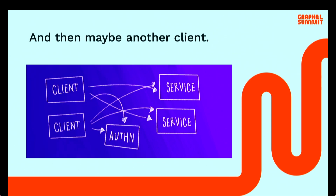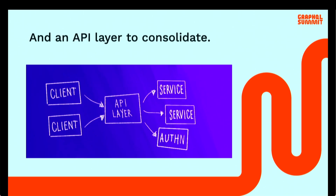All of a sudden you've got two clients. And as you grow, you get mobile apps, web apps, IoT devices, TV apps — you name it. Because it's a business, these clients tend to request similar data and there's a lot of overlap. They'll be asking your services for this data, there'll be cross-chatter going all over the place, until you decide to consolidate it and put all that chatter into a single place — so you create an API layer.